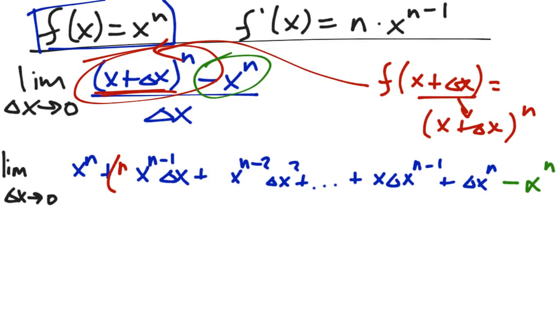This coefficient is n choose 2. If you notice the pattern, the pattern is always what the power of, I guess, the delta x is in this case. So n choose 1, n choose 2, blah, blah, blah. This coefficient is going to be n choose n minus 1. And this coefficient here is n choose n.